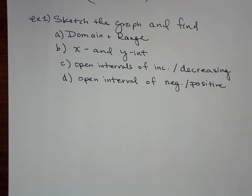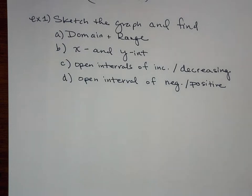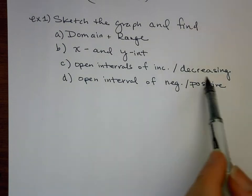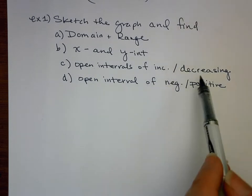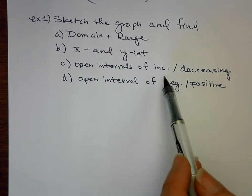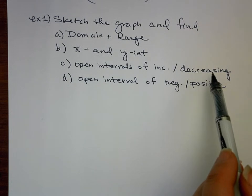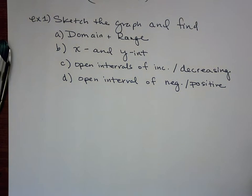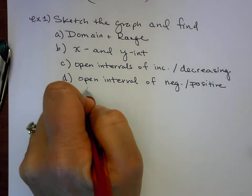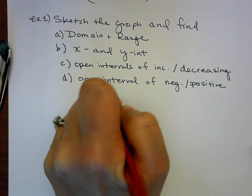You only have three of these to do for homework, but they're long problems because you have to do so many things for each one. Graphing is the easy part, and domain and range is pretty simple as well. X and y intercepts sometimes are easy, sometimes not. For increasing and decreasing, it's only going to be one of these, not both — so when you do increasing you'll have an answer, but decreasing will be never, or vice versa. You should never have two answers for both increasing and decreasing. And for the negative and positive, this one always splits at the x-intercept.